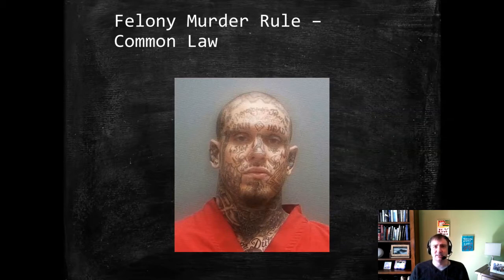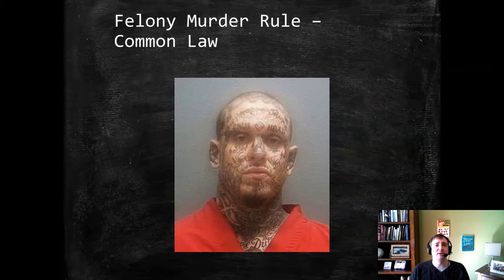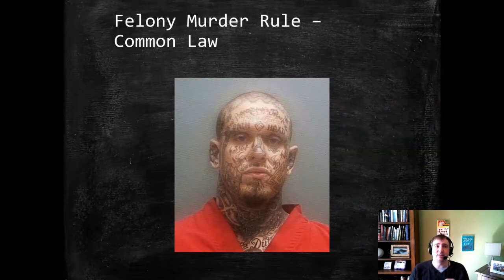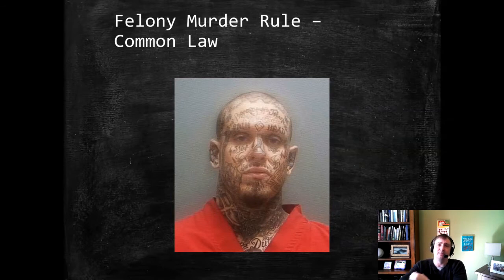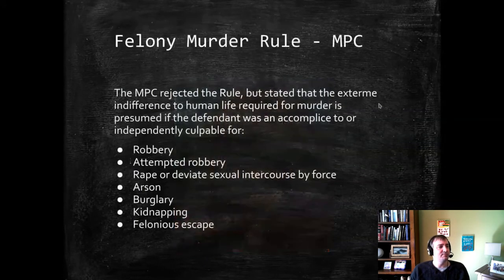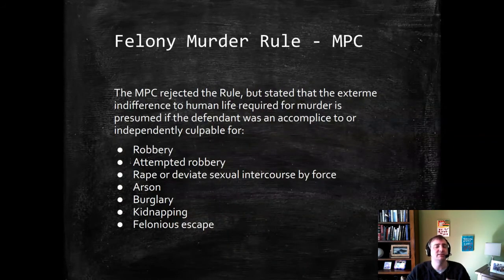The MPC drafters didn't like this rule for reasons that should be obvious — the MPC is very mens rea focused, very focused on the defendant's view of the world. This is an instance where a defendant would be culpable for a crime they may not have caused and have no obvious mens rea toward. Indeed, if they did have the purpose or knowledge to cause that death and did cause it, a traditional homicide charge would work just as well. So the MPC drafters did not want the felony murder rule included, but they did adopt language that threw a bone to people who wanted to maintain some version of it.